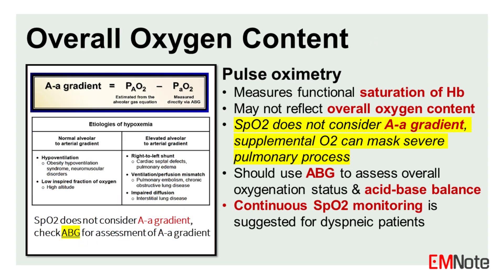It is also important to note that pulse oximetry measures the functional saturation of hemoglobin, which may not accurately reflect the overall oxygen content of the blood, particularly in cases of dyshemoglobinemias or shifts in the oxygen-hemoglobin dissociation curve. Pulse oximetry does not consider the A-a gradient, and supplemental oxygen can mask severe pulmonary processes. In such situations, arterial blood gas analysis provides a more comprehensive assessment of oxygenation status and acid-base balance.